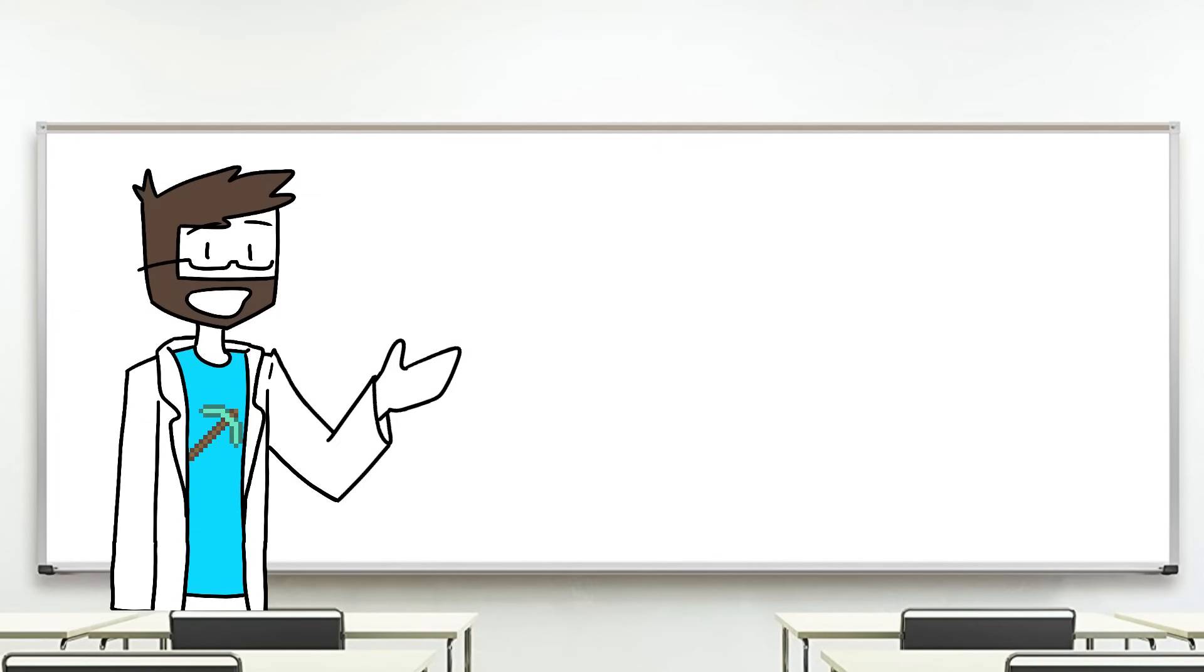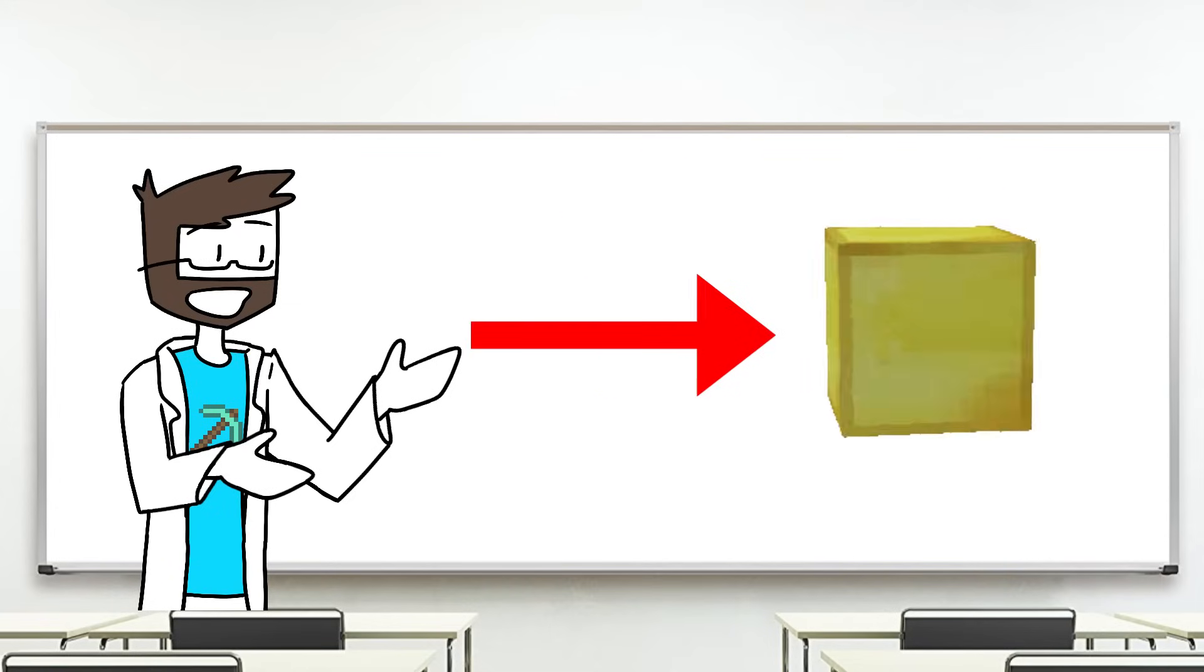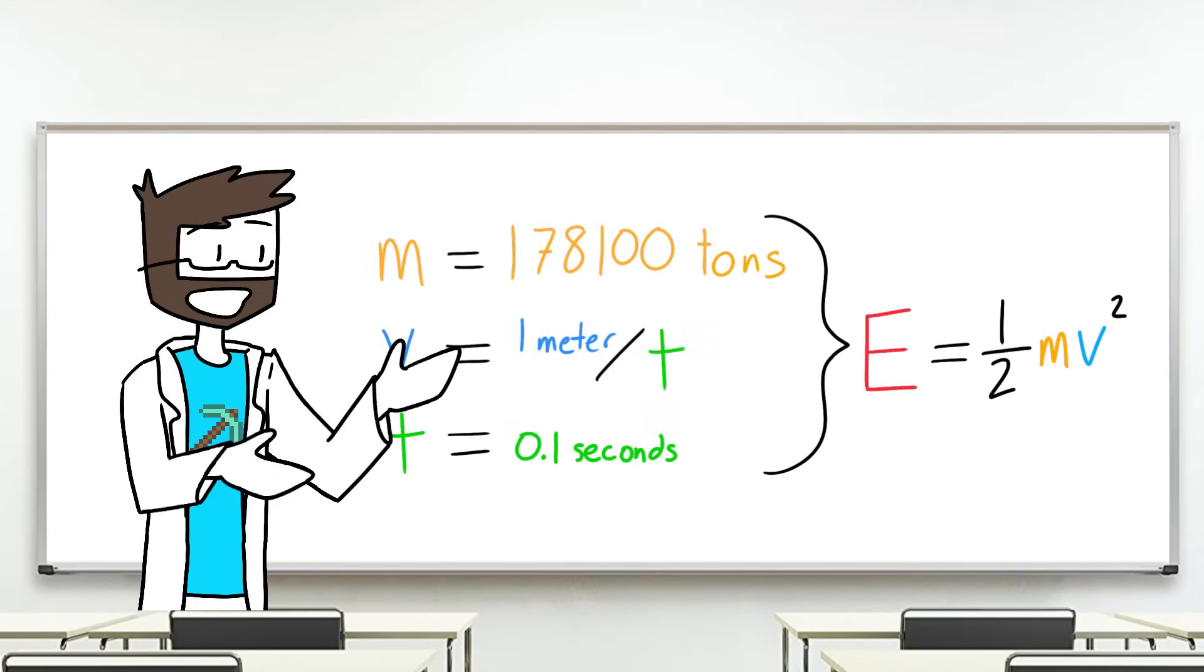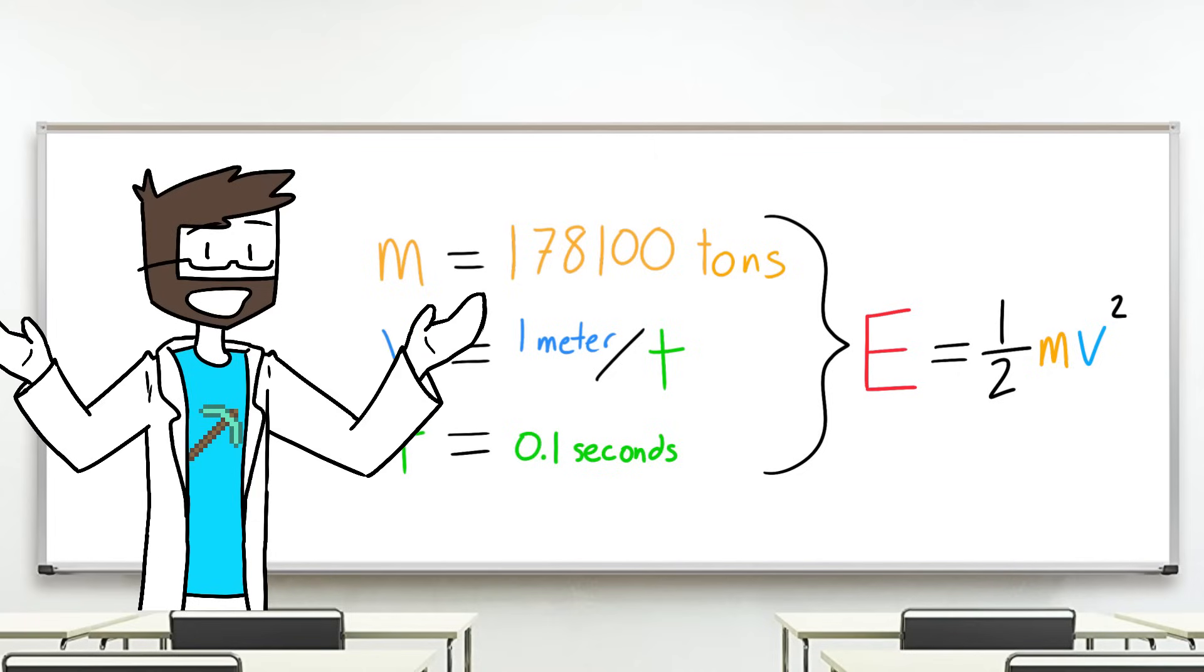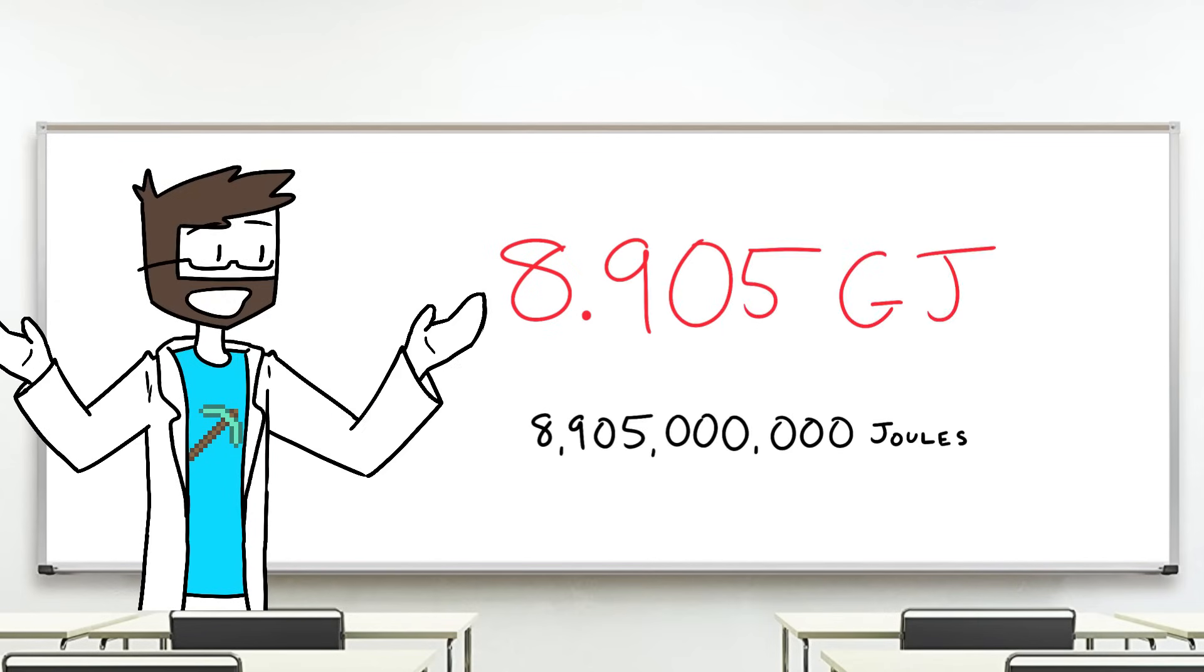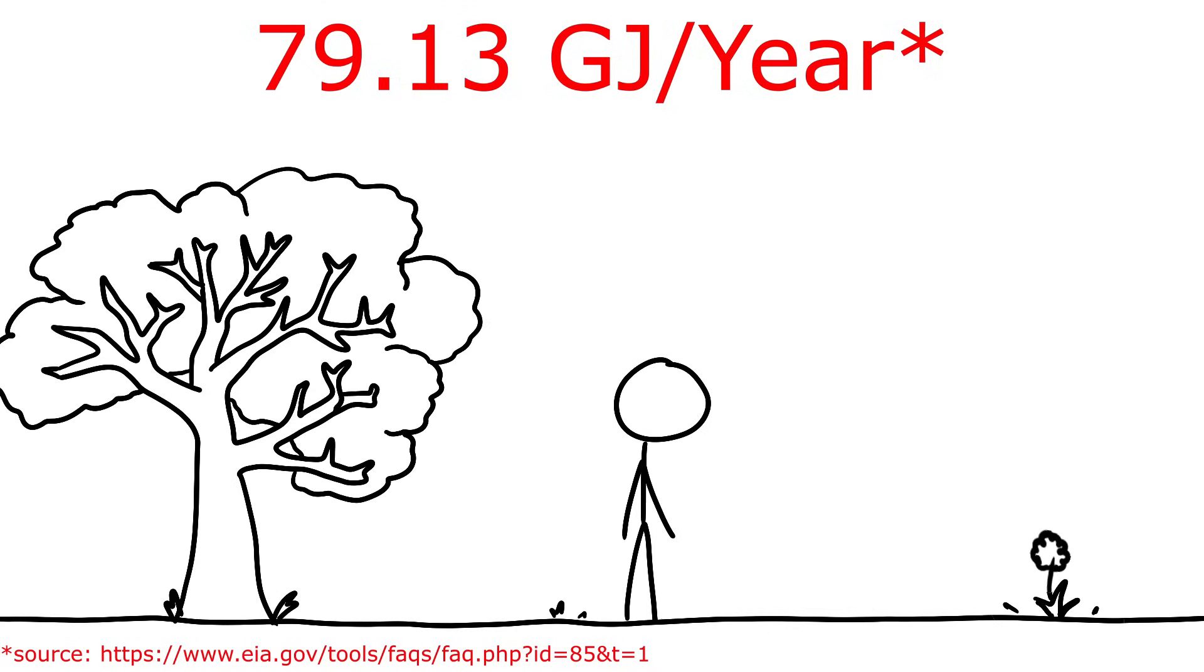To figure out how much power that one Redstone block produces in that time, we can calculate the energy applied to move the gold blocks. Plugging in our mass and velocity to this equation here, we find that the energy needed to move the gold is 8.9 gigajoules. That's about 10% of what the average person consumes in electrical energy per year.